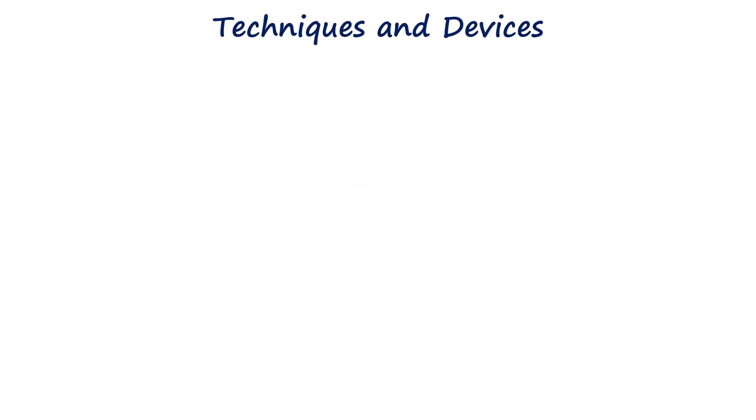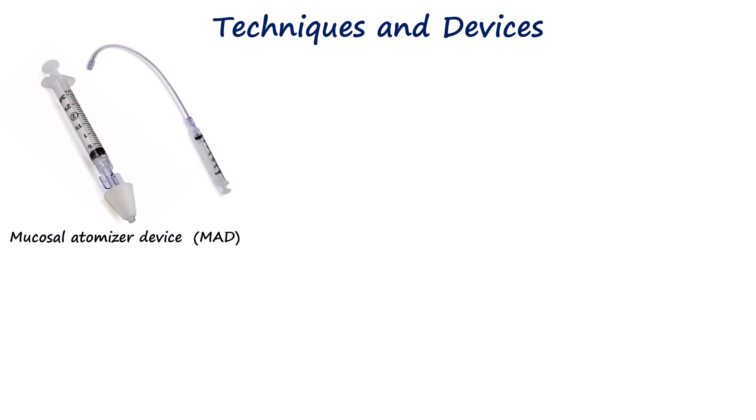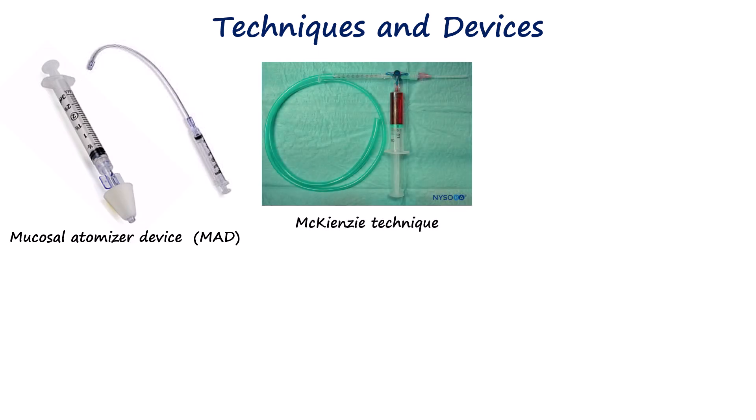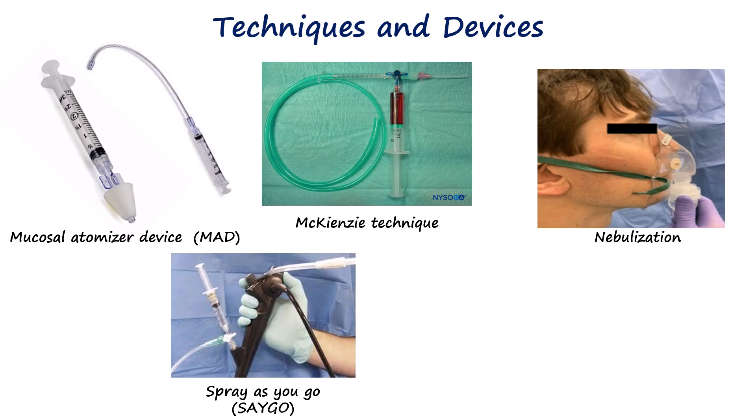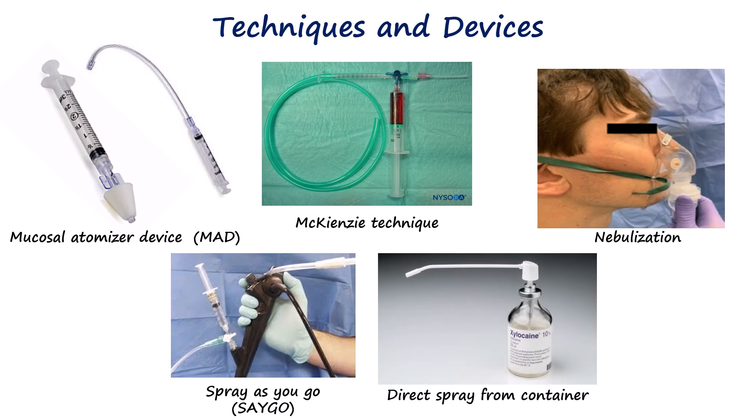There are many techniques and devices that can be used to deliver these drugs. This includes the mucosal atomization device, the McKinsey technique, nebulization, and the spray-as-you-go technique. Local anesthetics can also be directly sprayed from their container or used as a mouthwash or gargle. We will discuss the ones most commonly used in clinical practice.